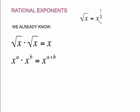Here's something that may look strange to you, but this is true: the square root of x is equal to x to the 1/2. To explain where this comes from, we're going to use two facts that you already know.